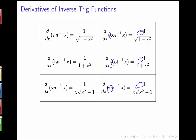From the table: the derivative of inverse sine (arc sine) is 1 over the square root of 1 minus x squared; the derivative of inverse cosine is negative 1 over the square root of 1 minus x squared. The derivative of inverse tangent (arctangent) is 1 over 1 plus x squared; the derivative of inverse cotangent is negative 1 over 1 plus x squared. The derivative of inverse secant (arc secant) is 1 over x times the square root of x squared minus 1; and the derivative of inverse cosecant is negative 1 over x times the square root of x squared minus 1.